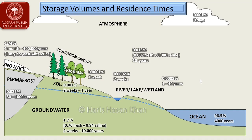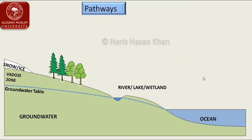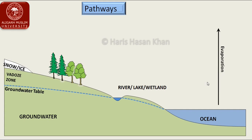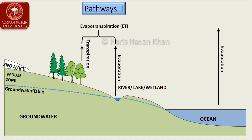Now let us discuss the different pathways and processes that connect the different stores of water in the hydrological cycle. Since there is no starting or ending point, we begin with the oceans as they contain the largest amount of water. Oceanic water evaporates, accounting for almost 90 percent of total evaporation on earth. The remaining 10 percent comes from continental surfaces, rivers, lakes, wetlands, and soil surfaces.